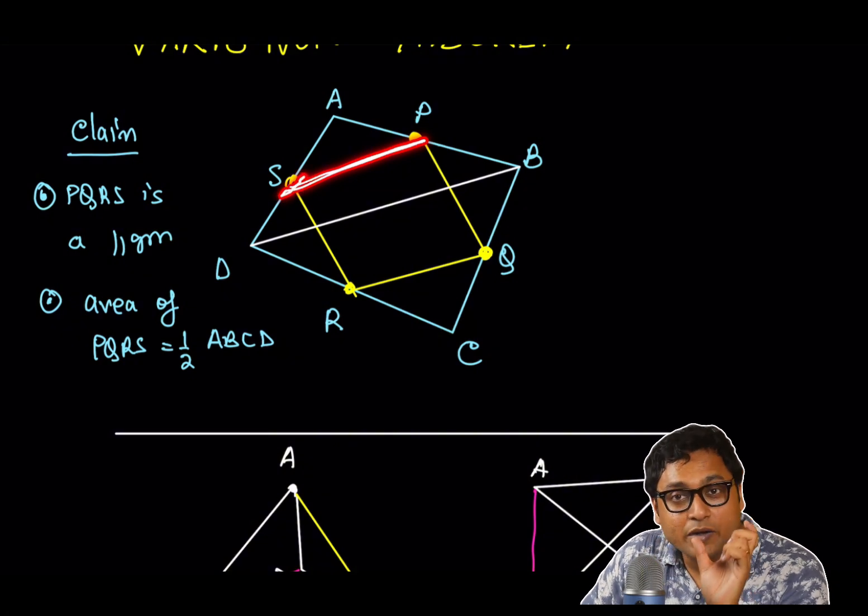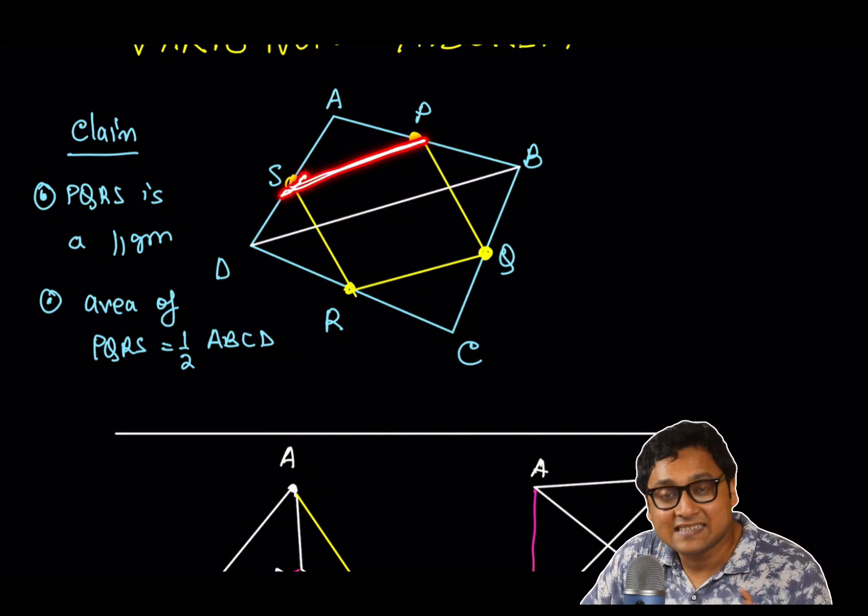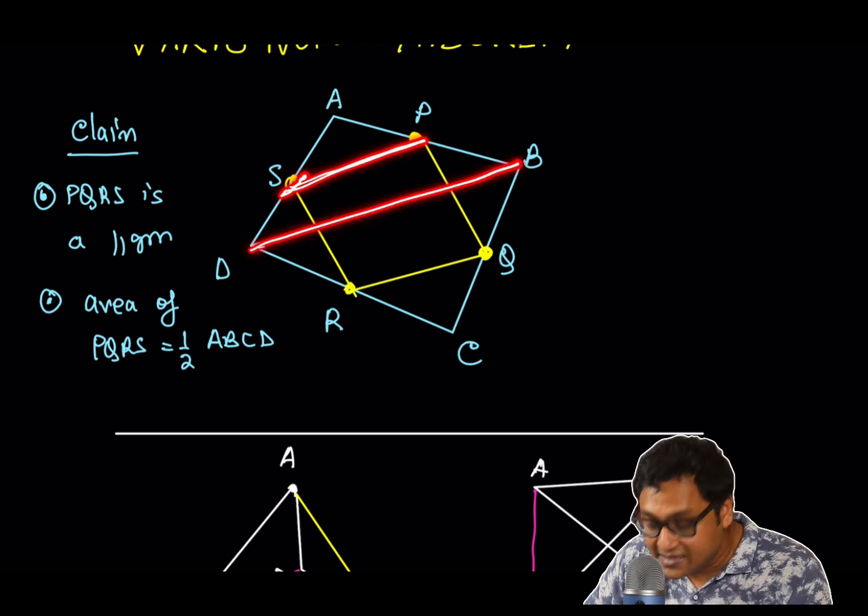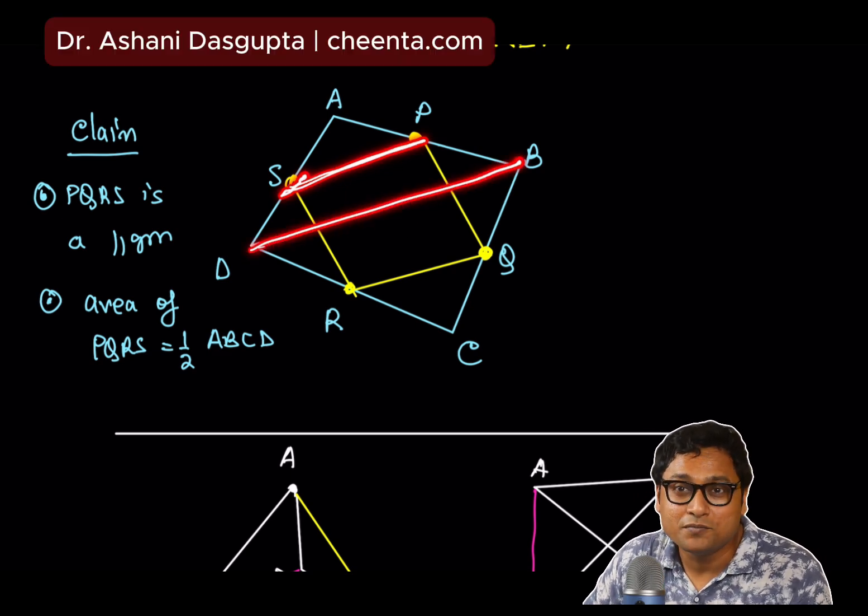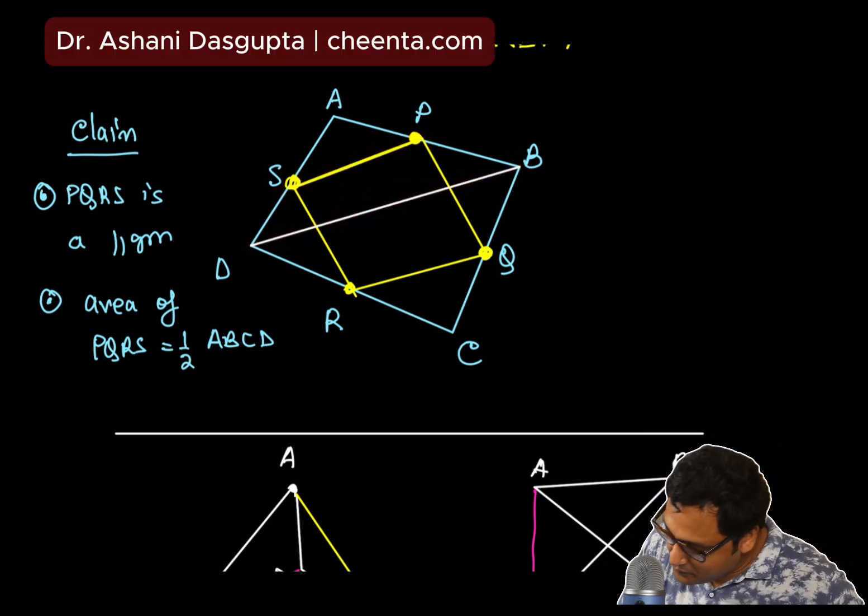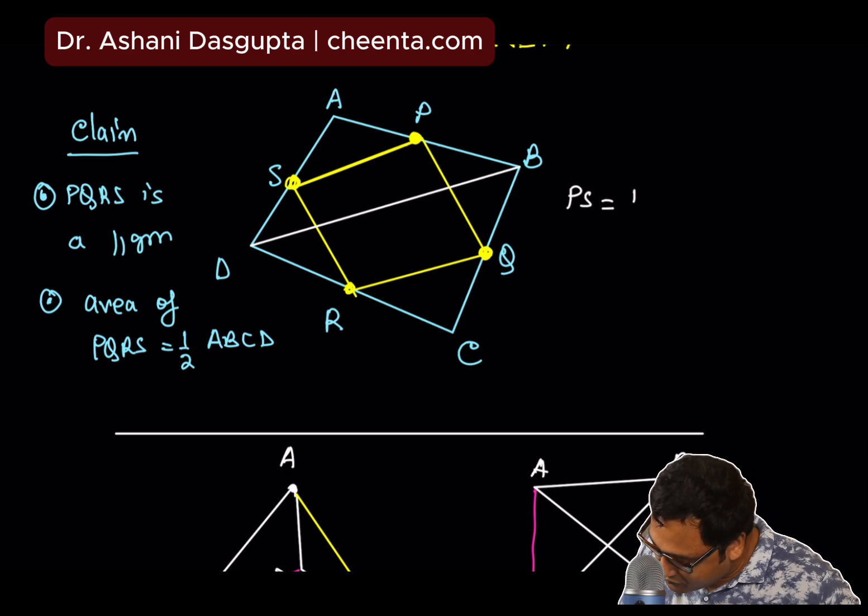So clearly, PS, the line joining the two midpoints PS, is half of BD and parallel to BD. So, PS is half of BD, and PS is parallel to BD.